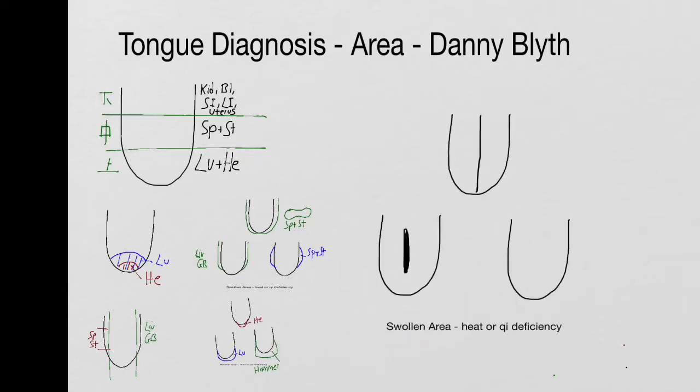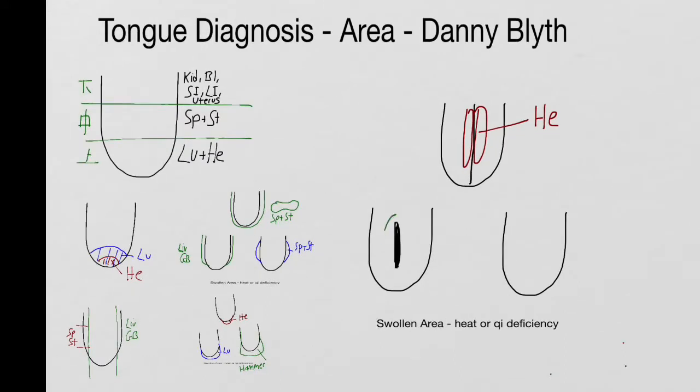You can also get swelling around a midline crack, which is to do with the heart, heart chi deficiency, usually quite a serious condition. If it's around a stomach crack, there's often phlegm in the stomach. So this tongue in profile sort of looks rather like that.